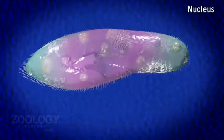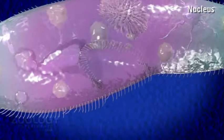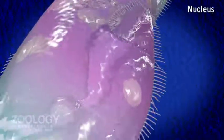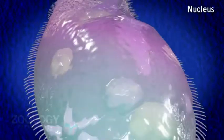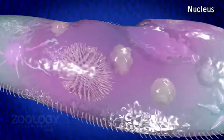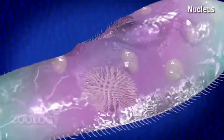Nucleus: Paramecium possesses two types of nuclei, called heterokaryotic. In Paramecium caudatum, there is a large macronucleus and a small micronucleus.